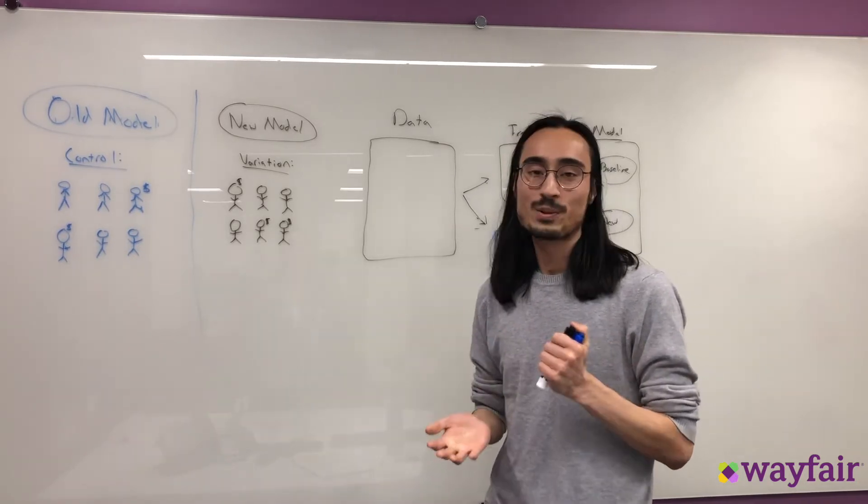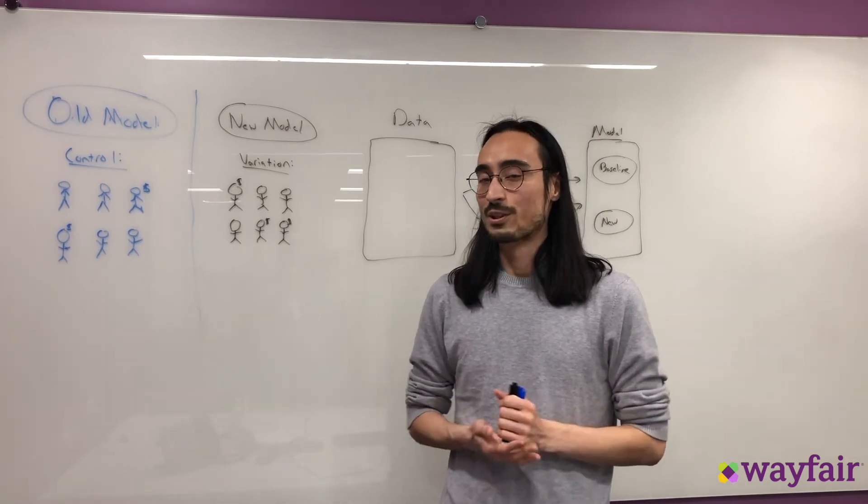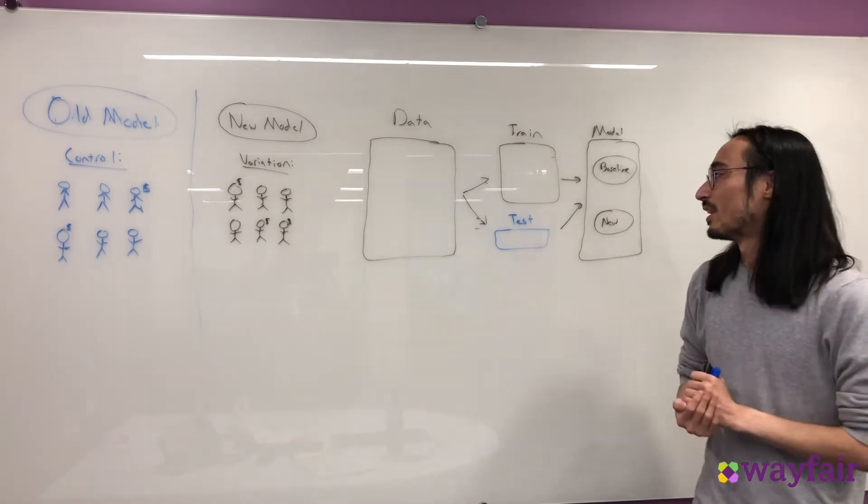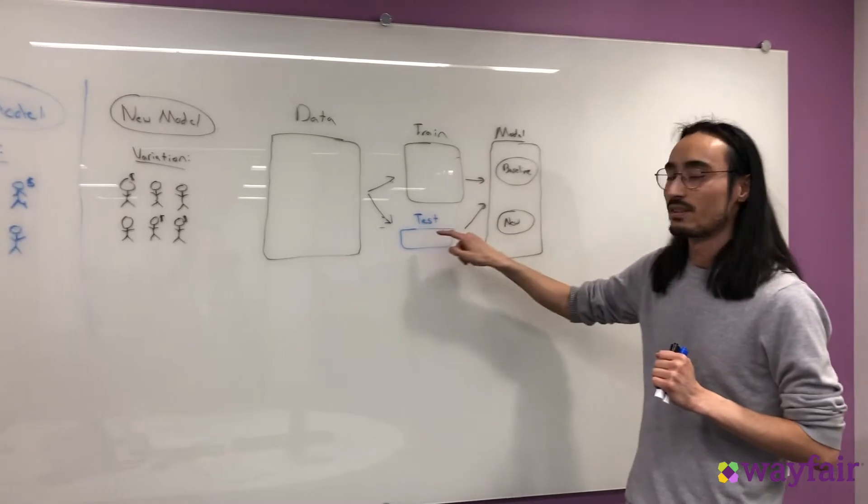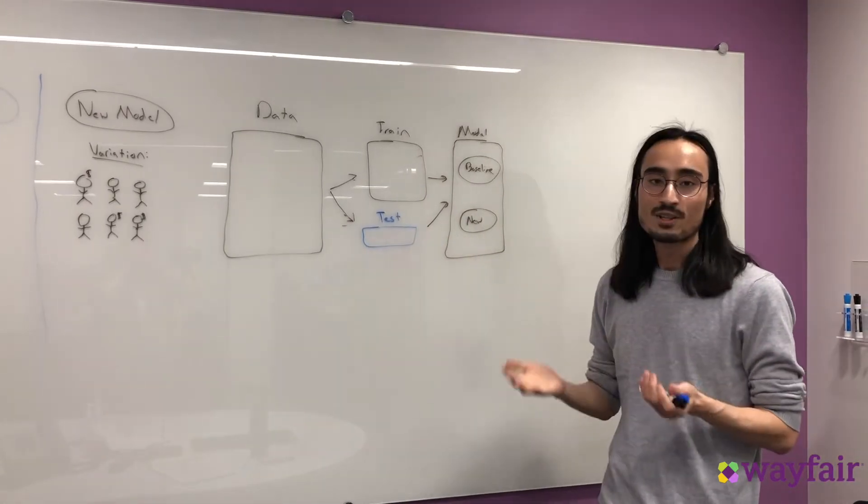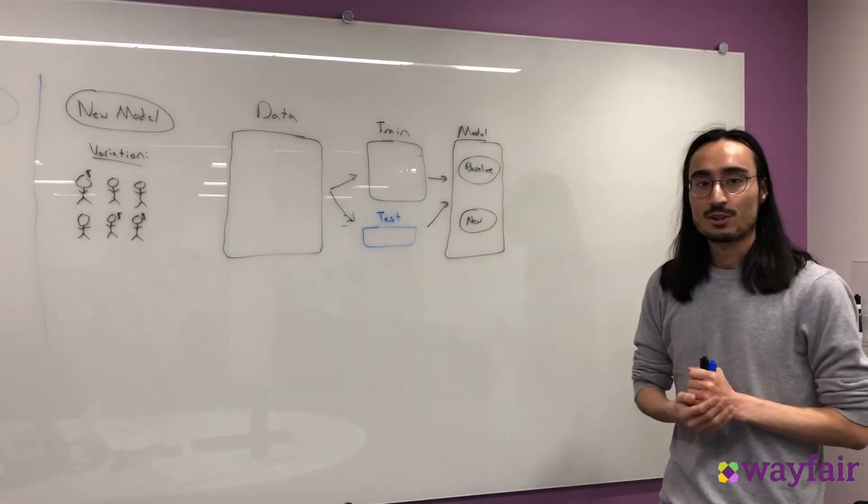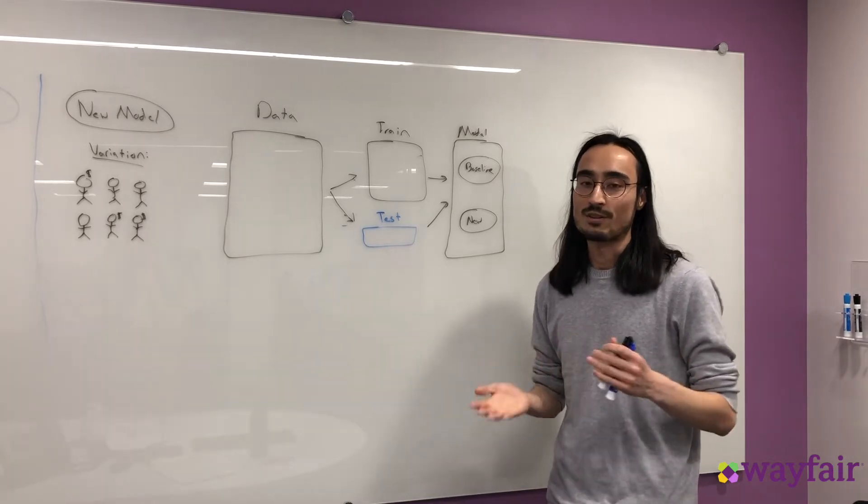If you have experience building machine learning models in the past, this is kind of a workflow that you're pretty familiar with. Basically you have your data and you split it into a data set called the training set and the test set. You'll use the training set to actually train the model. And once you're done training your baseline and your new model, you'll predict it on the test set. And then you'll use some metric to compare the two.